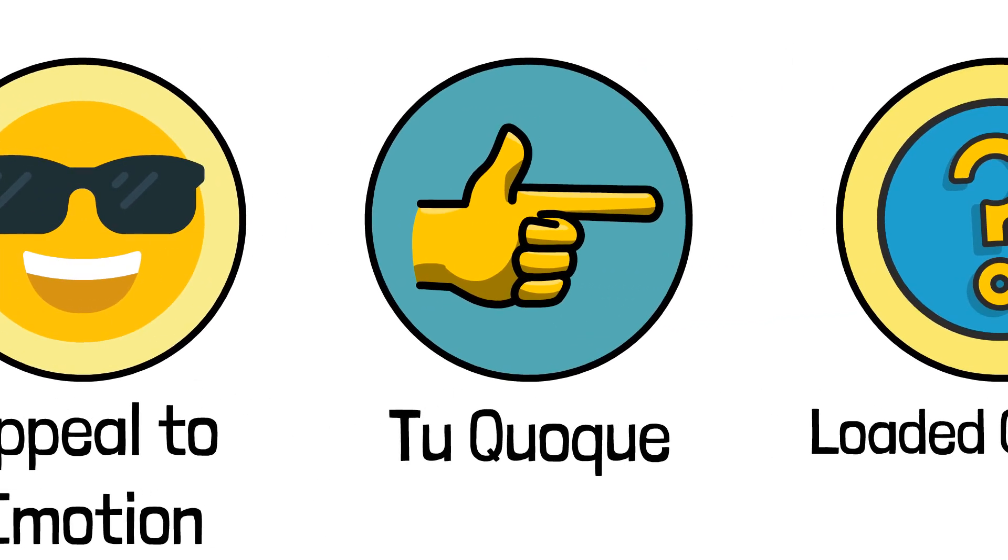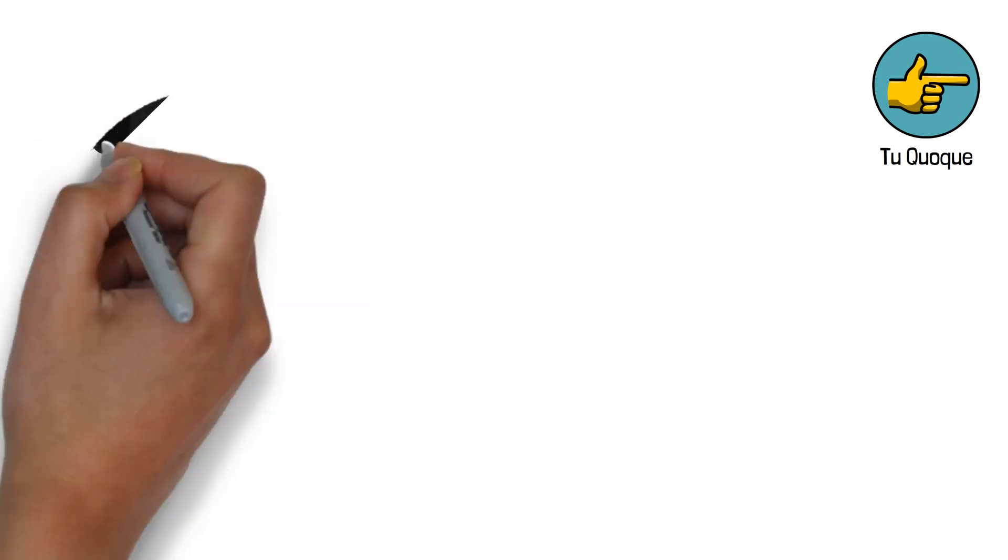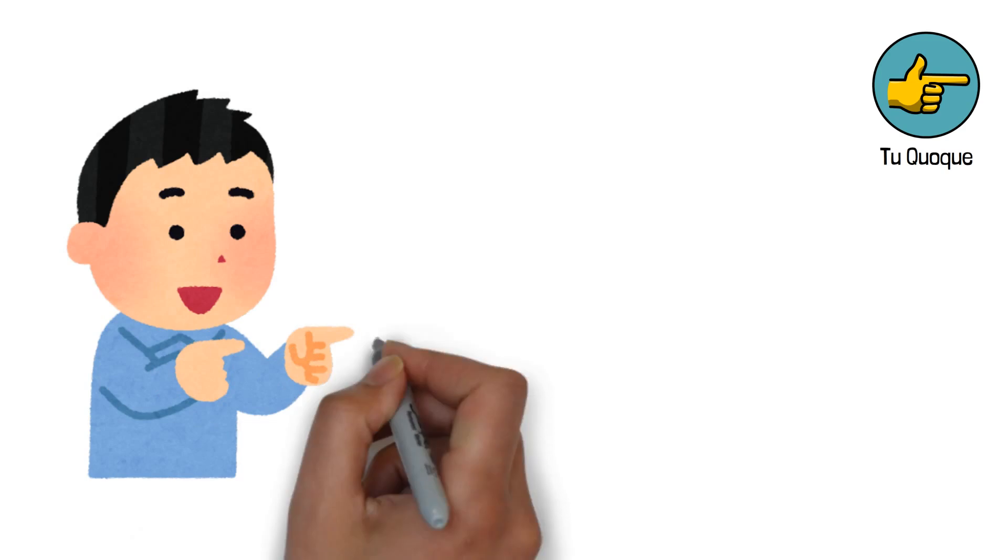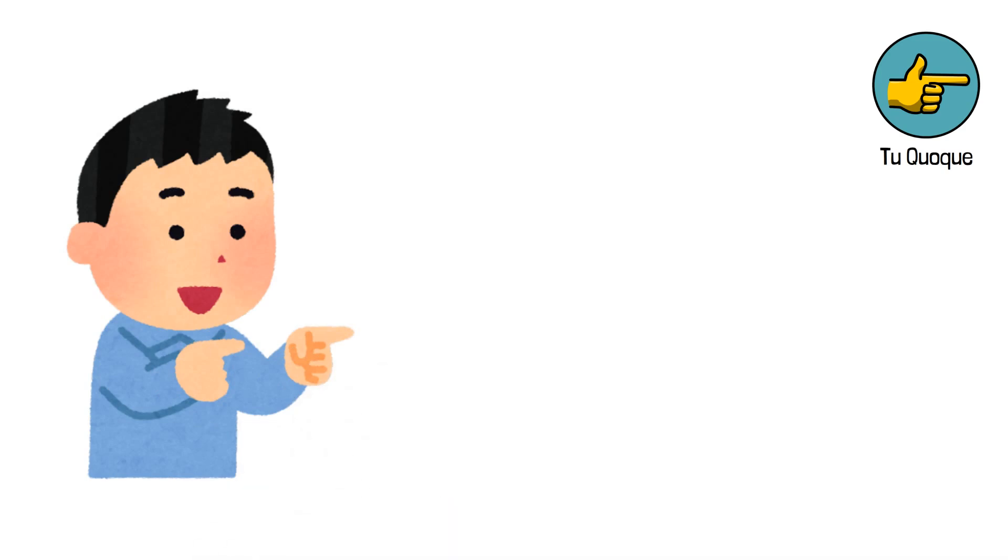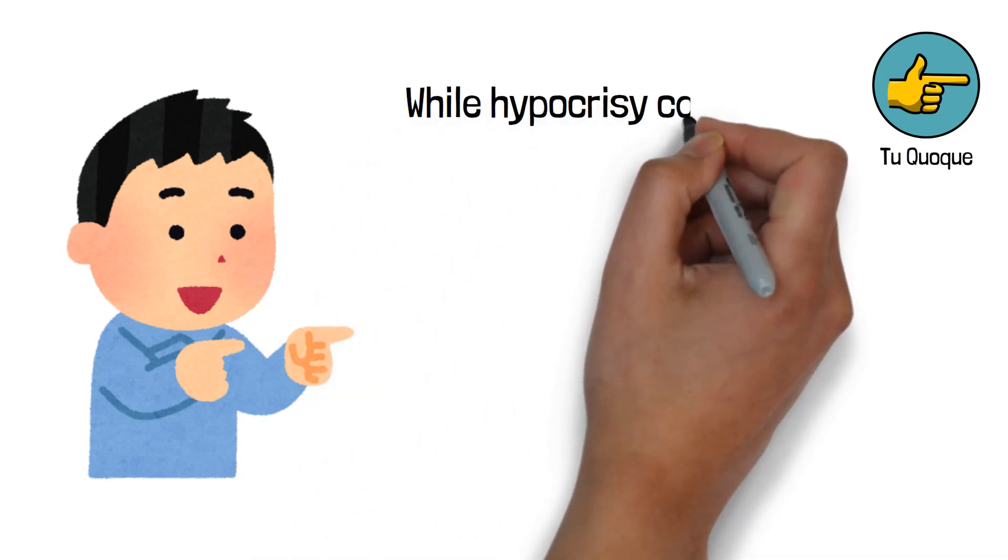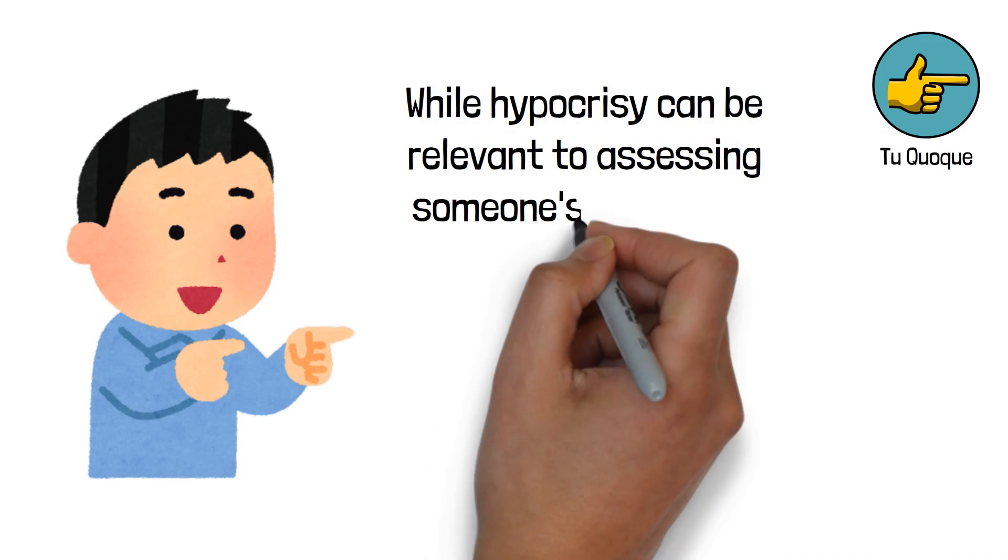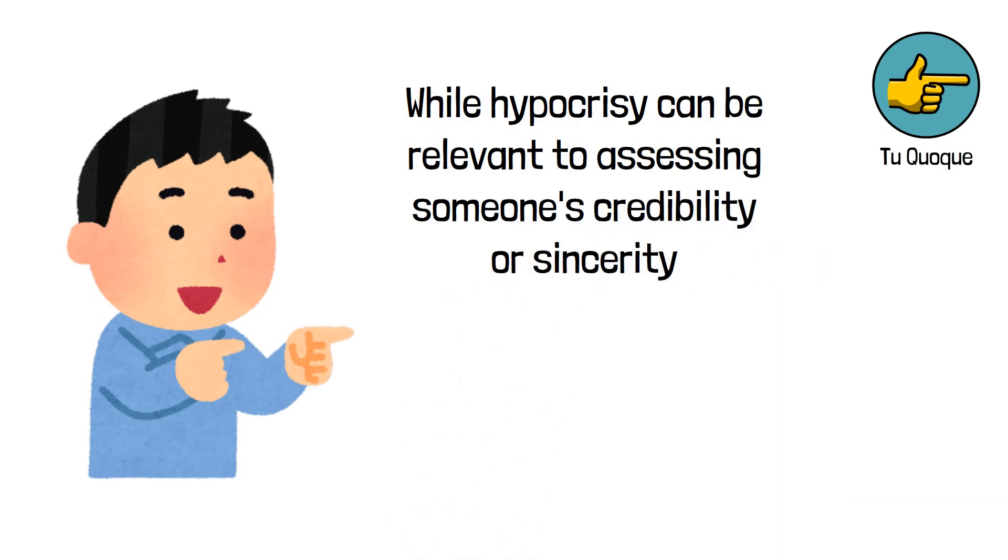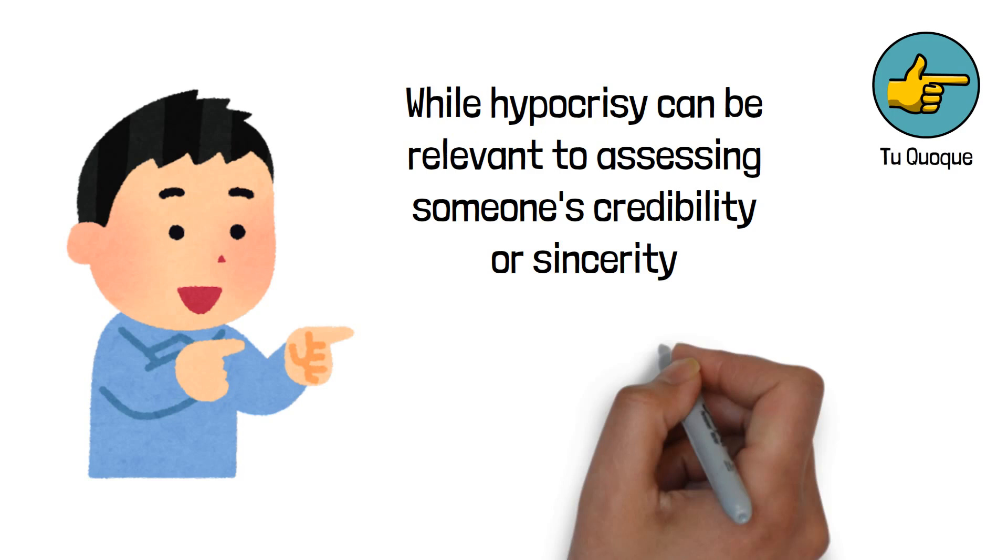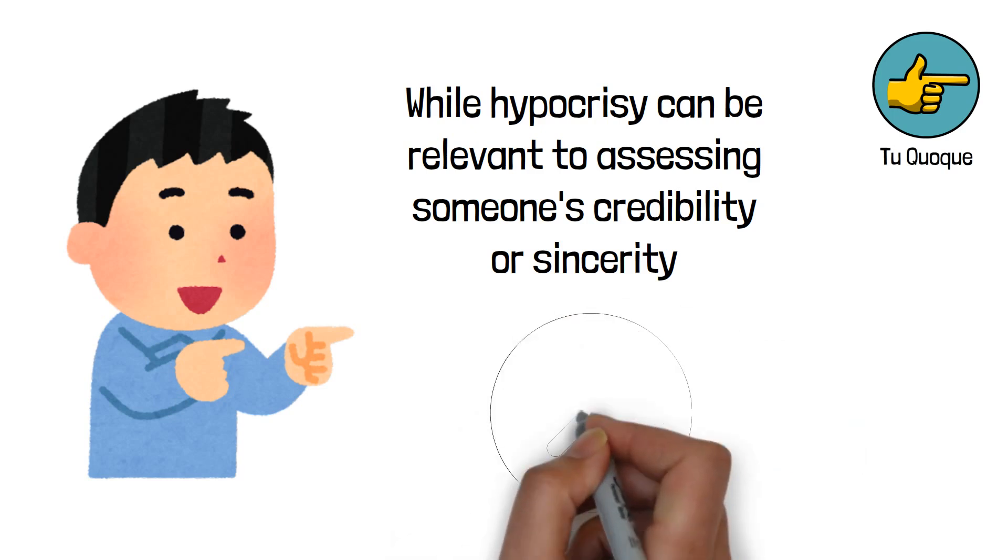13. Tu Quoque. This fallacy, also known as U2, or Appeal to Hypocrisy, occurs when someone dismisses an argument by pointing out that the person making the argument does not follow it themselves. While hypocrisy can be relevant to assessing someone's credibility or sincerity, it doesn't necessarily invalidate the argument they are making.